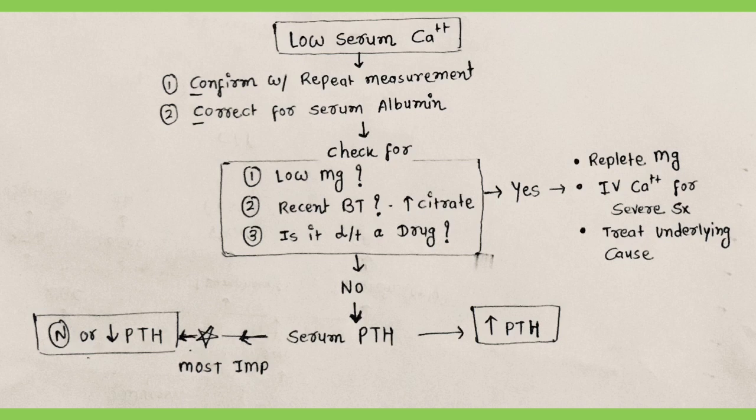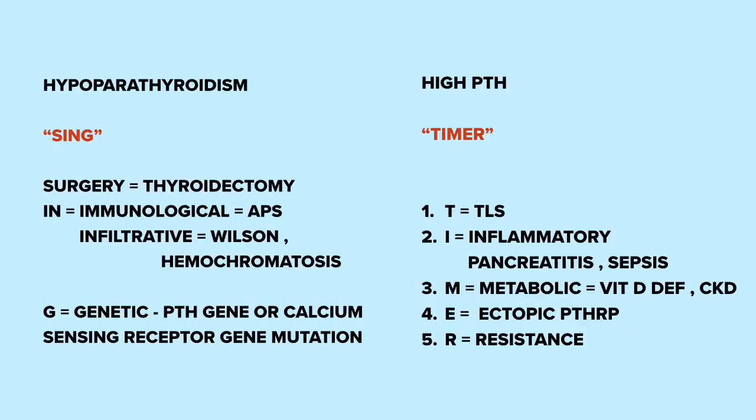You must also remember the causes. I've made two short mnemonics: SING and TIMER. SING covers causes of hypoparathyroidism: S means surgery like thyroidectomy; I means immunological and infiltrative conditions like autoimmune polyglandular syndromes and infiltrative disorders like Wilson's disease and hemochromatosis; G means genetic disorders of the PTH gene or calcium-sensing receptor gene mutation.